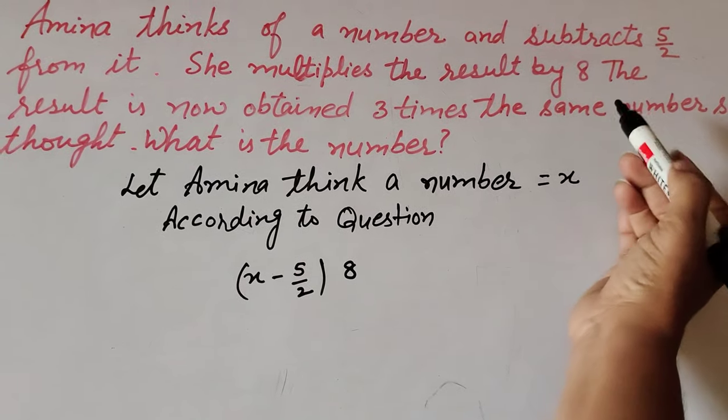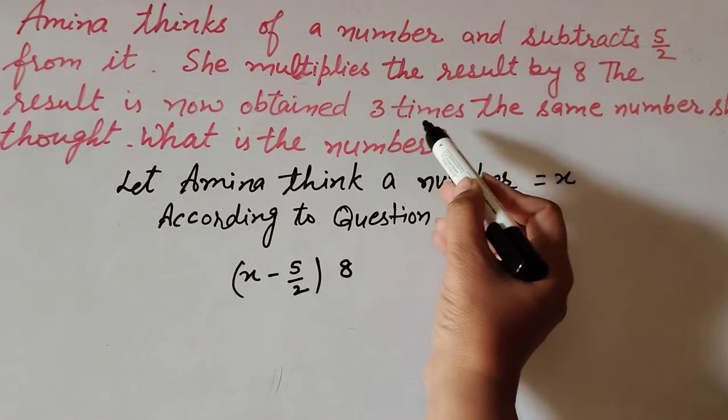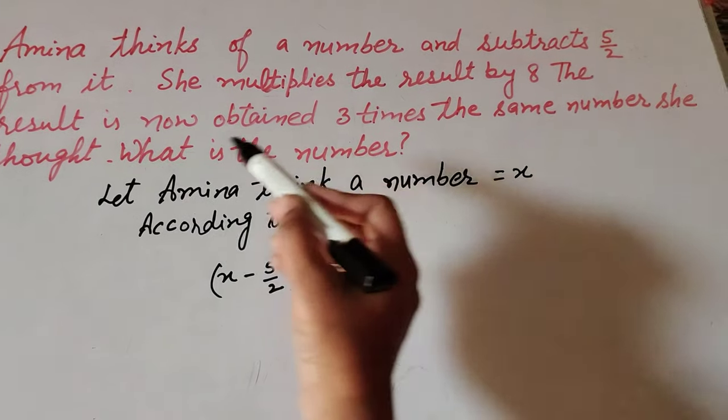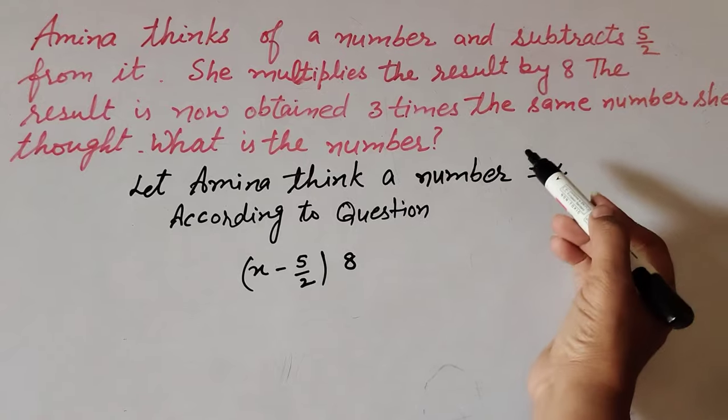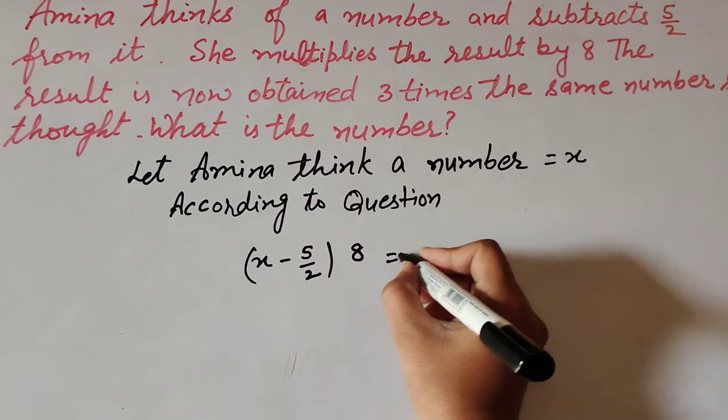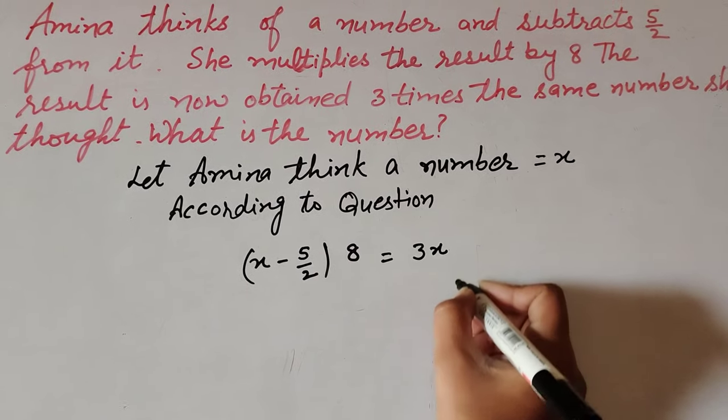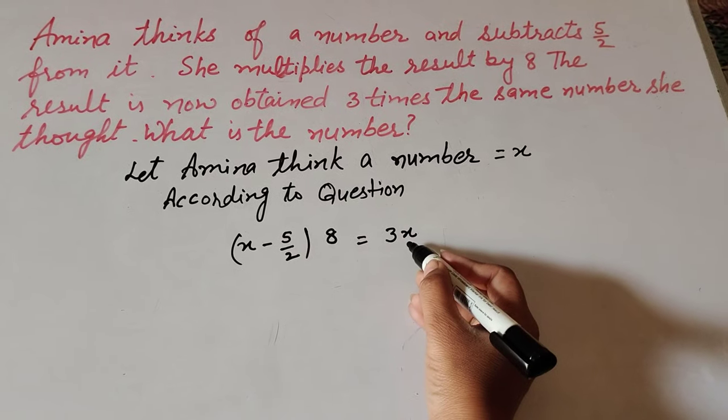She multiplied by 8. The result now obtained is three times the same number she thought. She thought number x, and the result is 3 times of x. Now we simplify this expression.